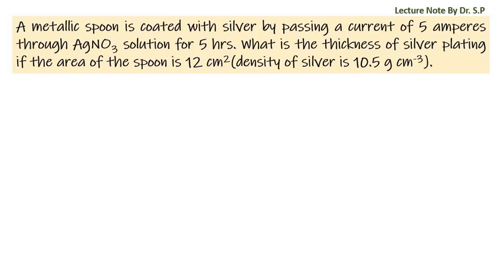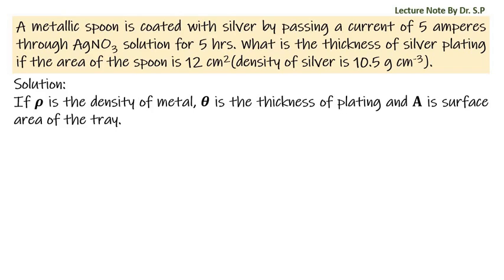We have a question: a metallic spoon is coated with silver by passing a current of 5 amperes through silver nitrate solution for 5 hours. What is the thickness of silver plating if the area of the spoon is 12 cm² and the density of silver is 10.5 gram per cm³?